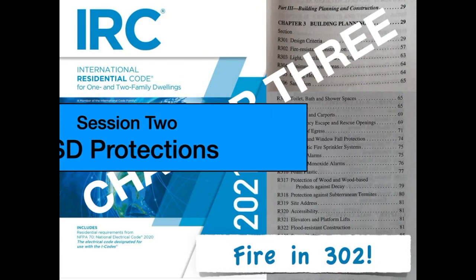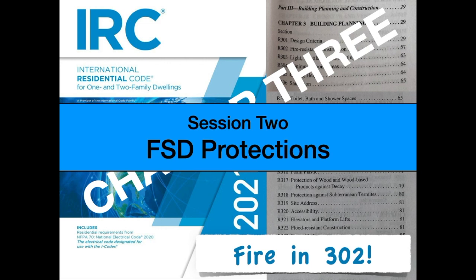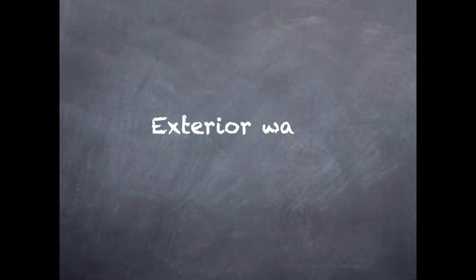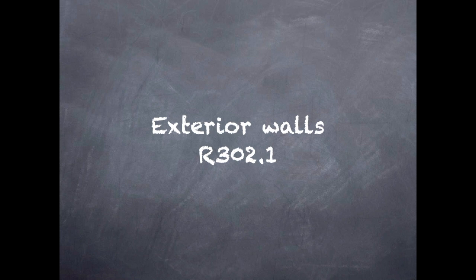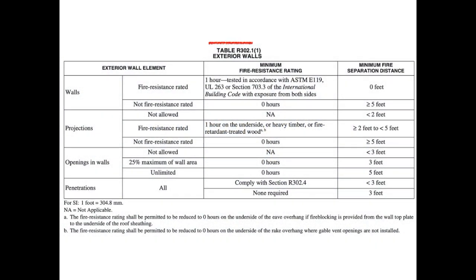This is a continuation of the first session about fire separation distance and all the required protections, distances, and details. It all starts at section 302.1, but all this section does is reference us to table 302.1, where we see the four exterior wall elements that are addressed by fire separation distance.